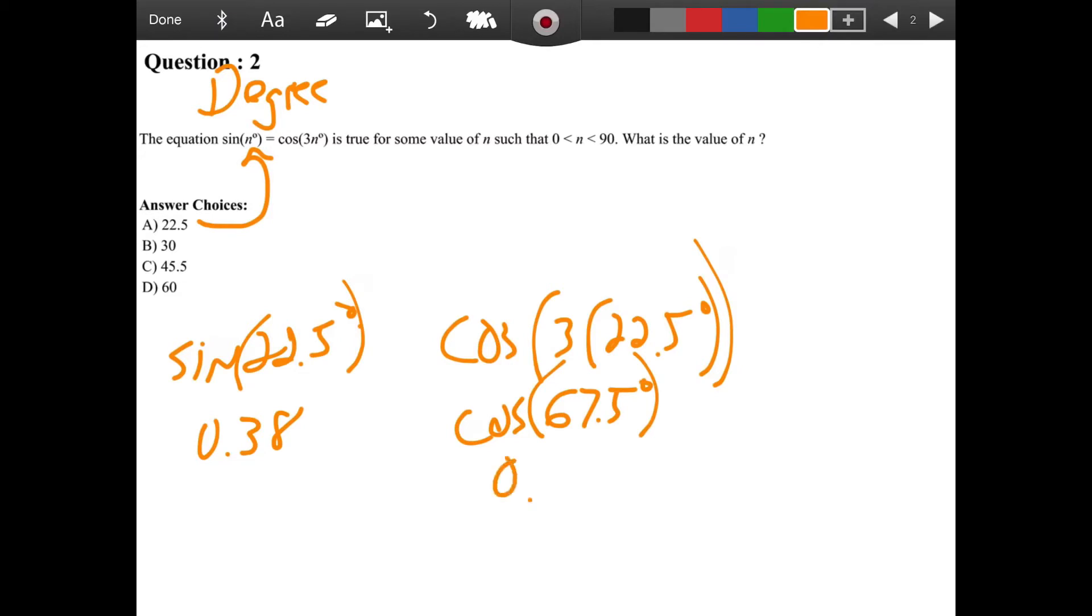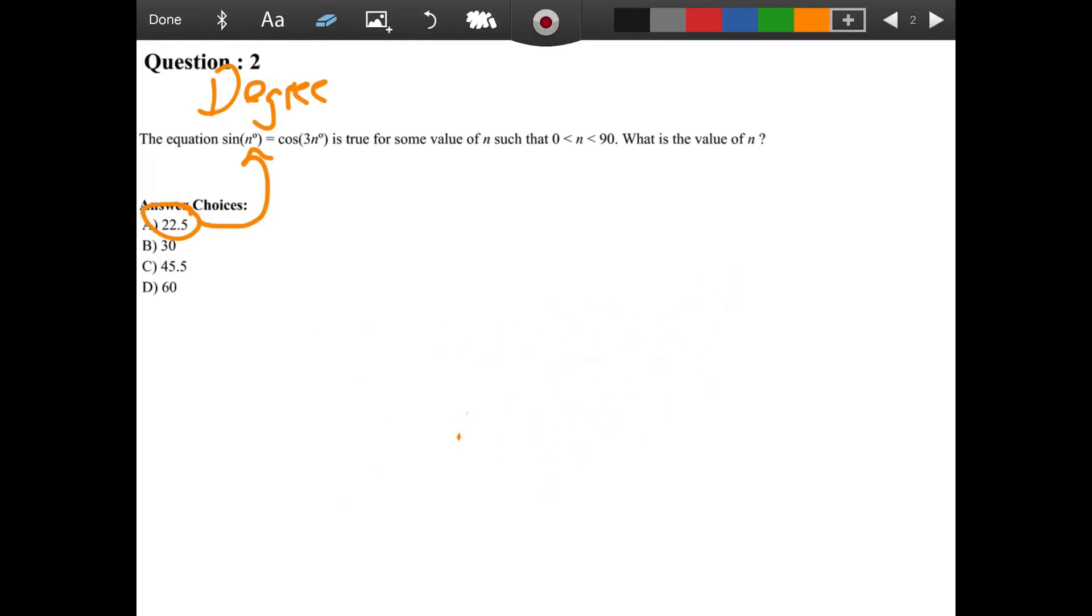And then the cosine of 67.5. Boom, it's 0.38. So these two match. So I know that the answer is choice A. So that's a kind of a quick way to do this, but it's also important to understand the math behind this.